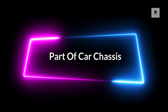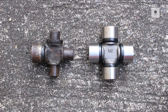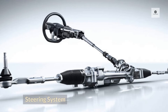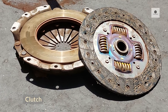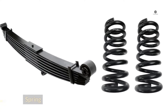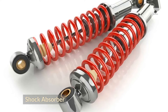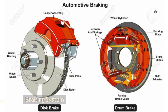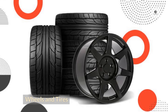Parts of the car chassis include: transmission, universal joint, rear axle, steering system, clutch, spring, shock absorber, stabiliser bar, braking system, and wheels and tyres.